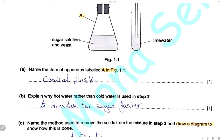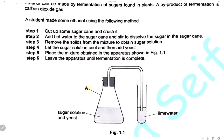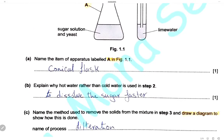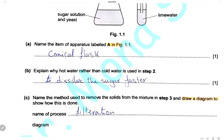Explain why hot water rather than cold water is used in step 2. In step 2 we use hot water to dissolve the sugar from the sugar cane. Hot water will dissolve the sugar faster.